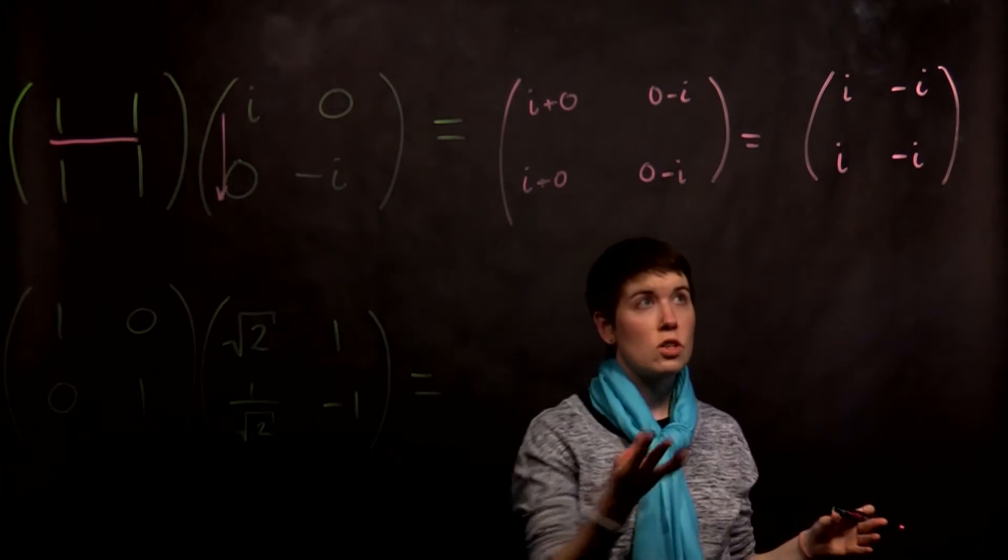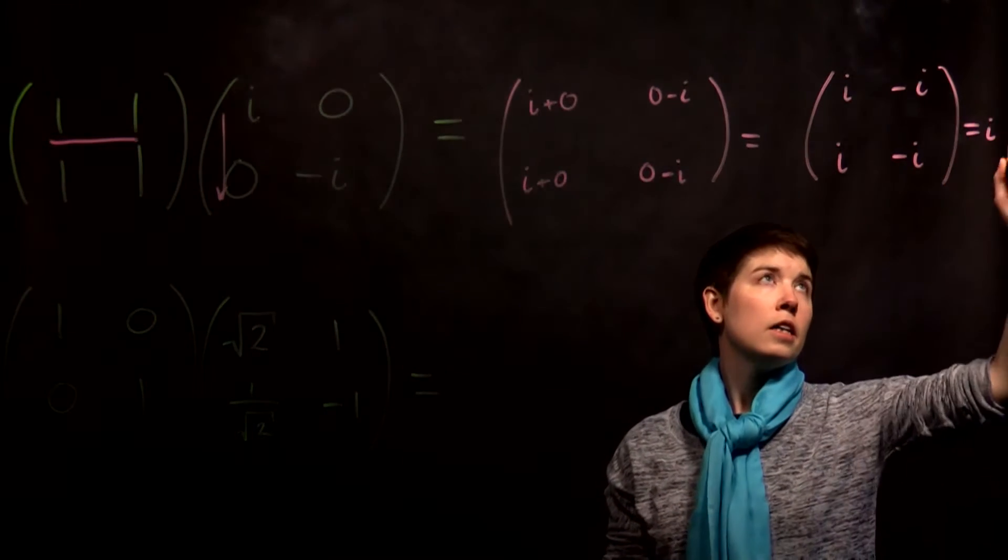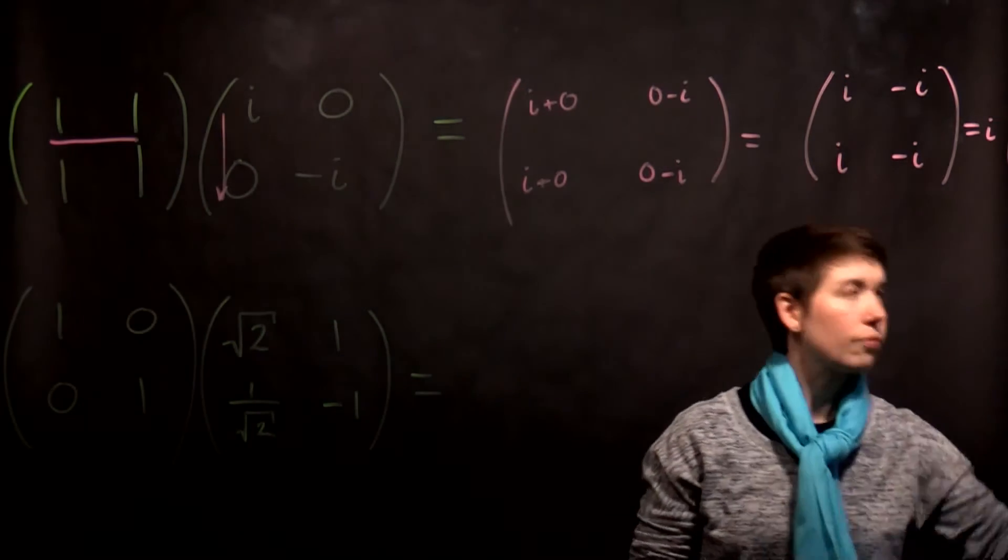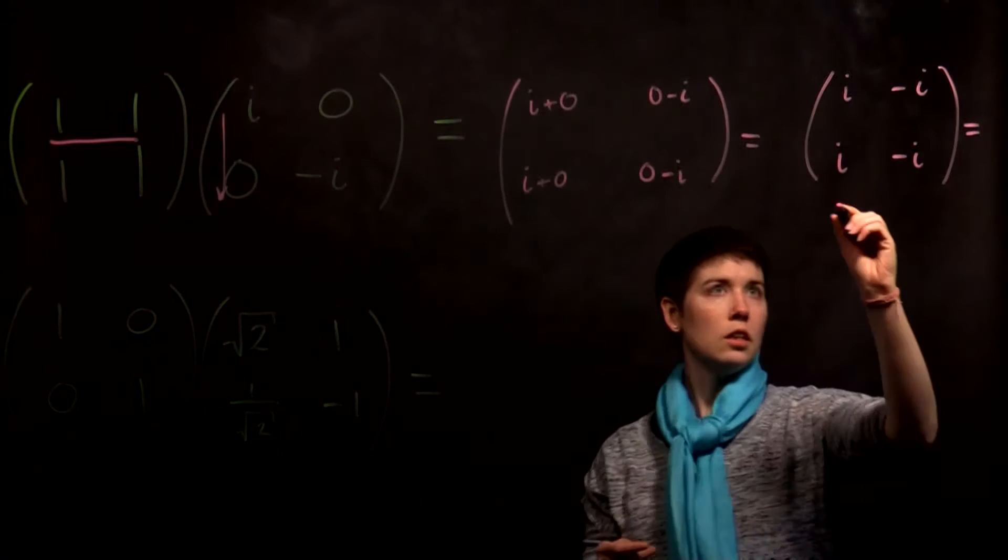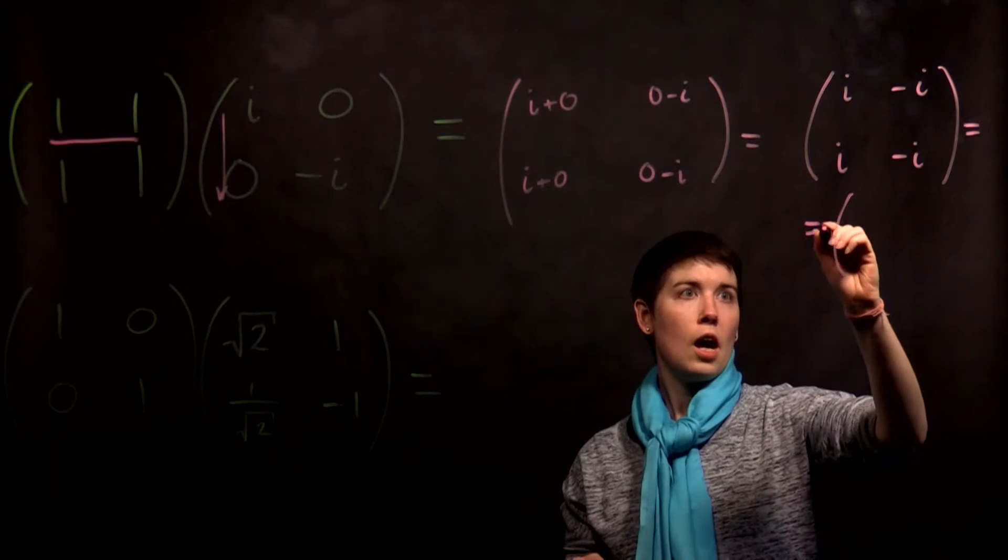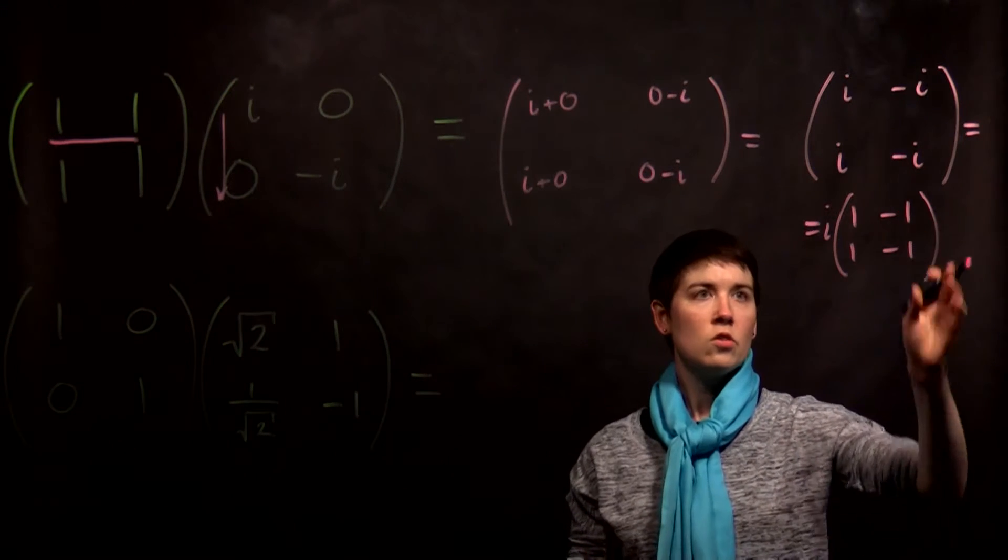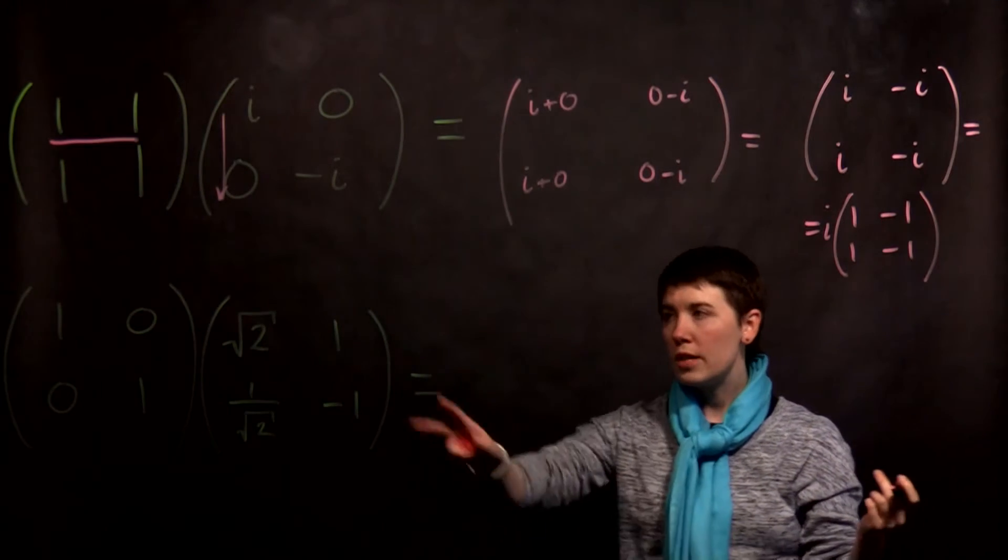Now if you wanted to, we could actually factor out a term here. And we could make this be i times, oops, I've run out of room. We could make this be i times 1, negative 1, 1, negative 1. So we have a two by two matrix and we can pull out a term of i.